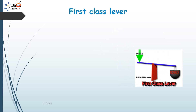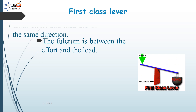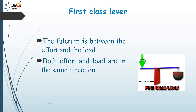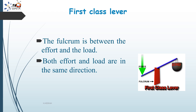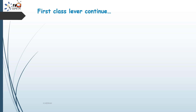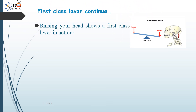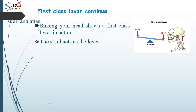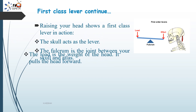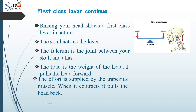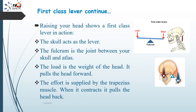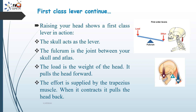In a first class lever, the fulcrum is between the effort and the load, and both effort and load are in the same direction. An example in the body: raising your head is a first class lever in action, where the skull acts as the lever. The fulcrum is the joint between the skull and atlas, the load is the weight of the head pulling it forward, and the effort is supplied by the trapezius muscle when it contracts to pull the head back.